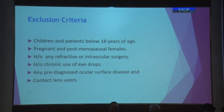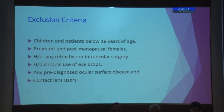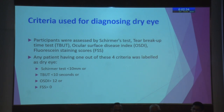Exclusion criteria included children below 18, pregnant and post-menopausal women (due to estrogen and hormonal associations with dry eye), history of any refractive, ocular surface, or intraocular surgery, chronic use of any eye drops, pre-diagnosed ocular surface disease, and contact lens users. The criteria chosen for diagnosing dry eye were the Schirmer test, tear breakup time, ocular surface disease index (OSDI), and fluorescein staining score. Any patient having one out of these four tests positive was labeled as dry eye.